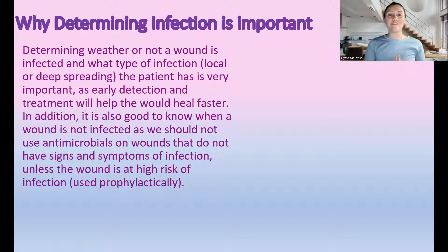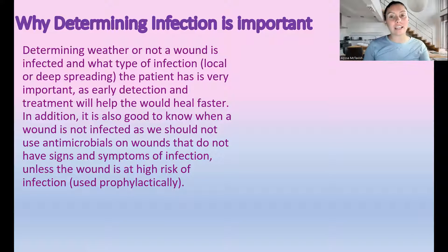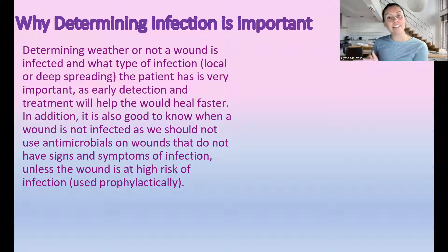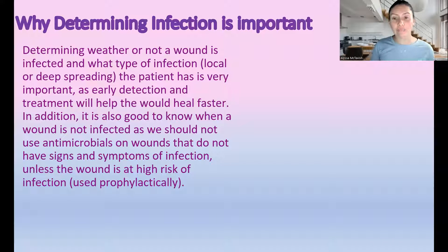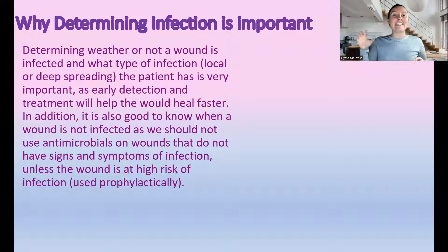Why is determining infection so important? We need to know whether or not a wound is infected because we need to catch it quickly and start treating it to prevent further complications. If we can catch it right away where it's just in that local phase and treat it with a topical antimicrobial instead of a systemic antibiotic, it is so much better. When we take an oral antibiotic, we have a chance of the bacteria becoming resistant, and we're always talking about antibiotic-resistant bacteria. So if we can prevent the overuse of antibiotics, that is what we want to do.